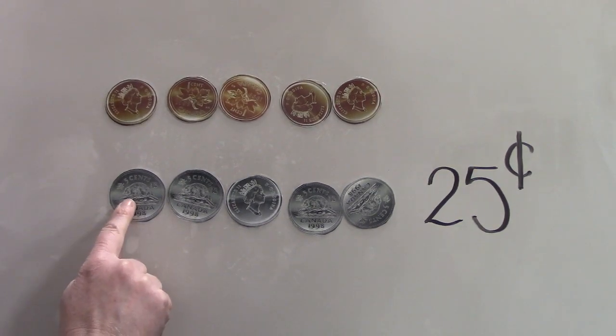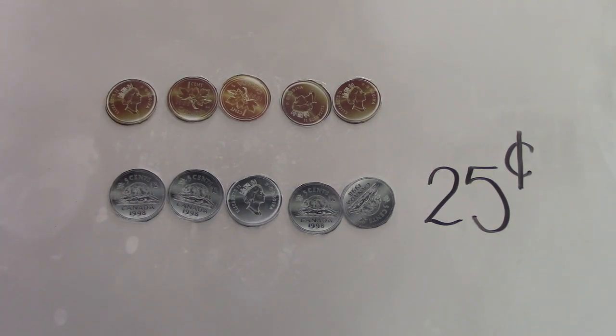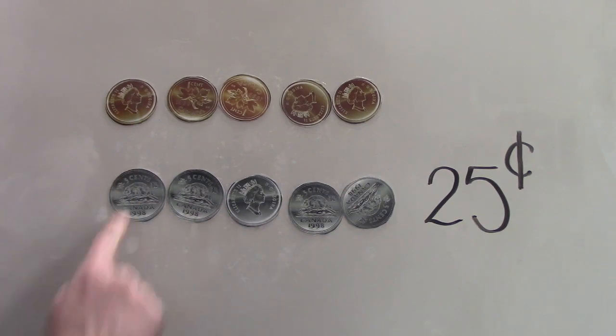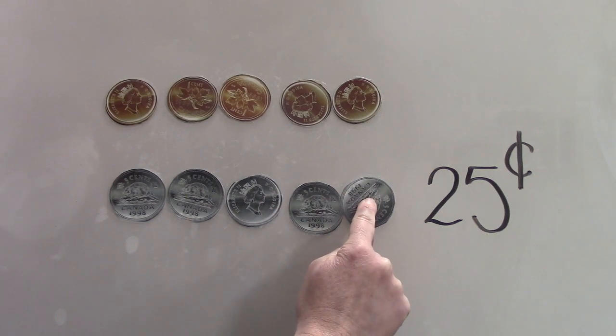If your coin has a beaver on it, and it says five cents, then you know it's a nickel. Let's count this again. Five, 10, 15, 20, 25.